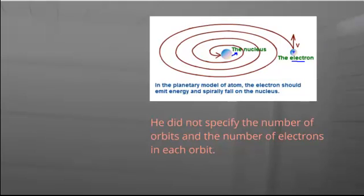Here, this electron, after moving for a certain amount of time, will lose energy continuously and take the spiral path and finally fall onto the nucleus.